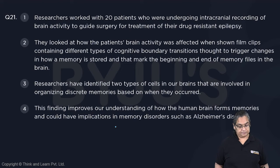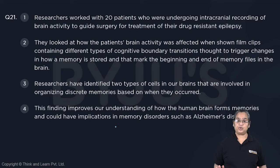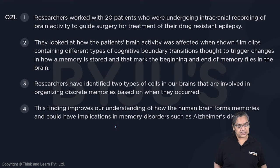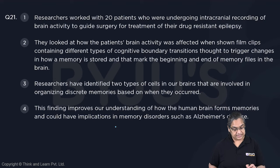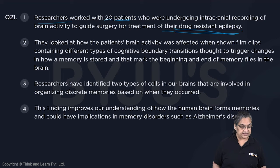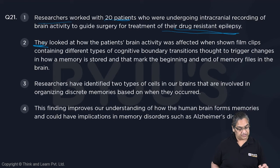Question 21. This is a para jumble without options — read the jumbled sequence first. Sentence 1: Researchers worked with 20 patients who are undergoing intracranial recording of brain activity to guide surgery for treatment for drug resistant epilepsy. Sentence 2: The researchers looked at how the patients' brain activity worked.